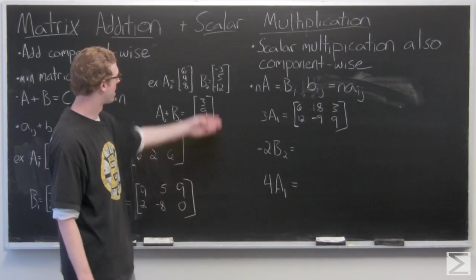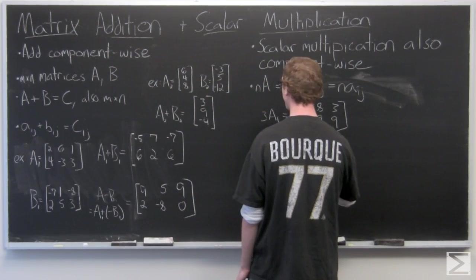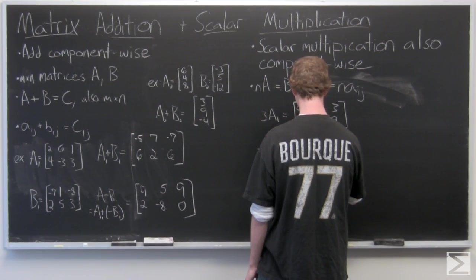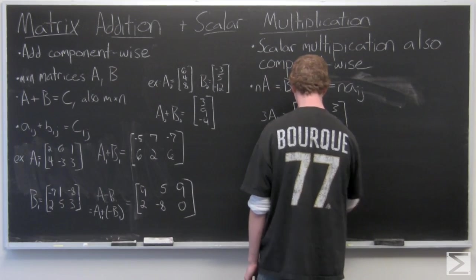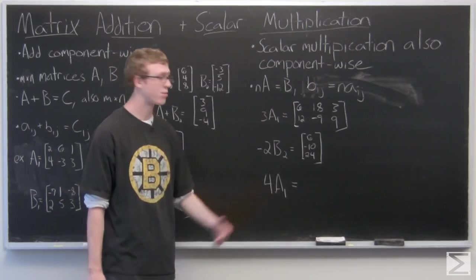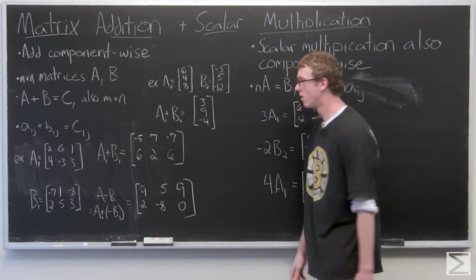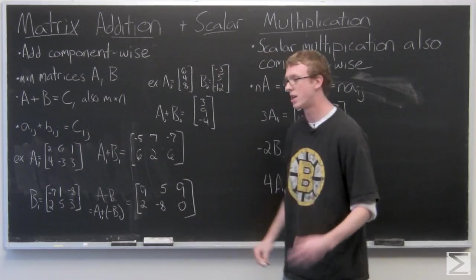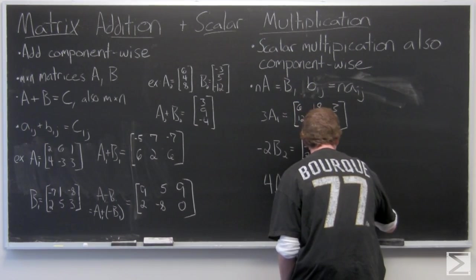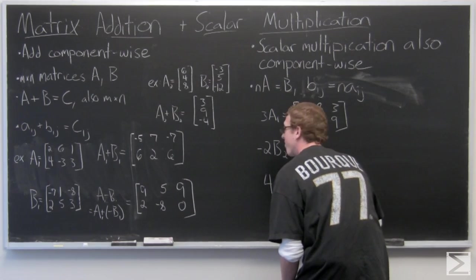Negative two times B2. It's again going to be a three by one matrix. And the result is 6, negative 10, 24. And last, we'll look at four times A1. So again, just multiply A1 component-wise by four.